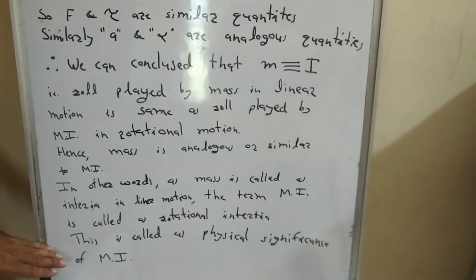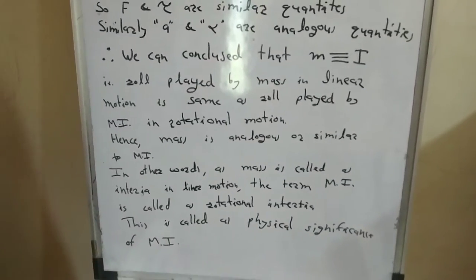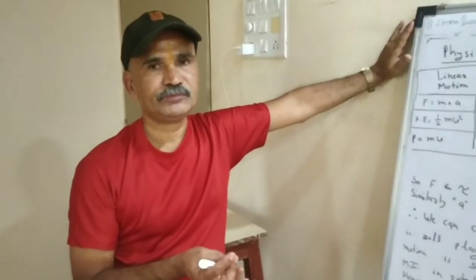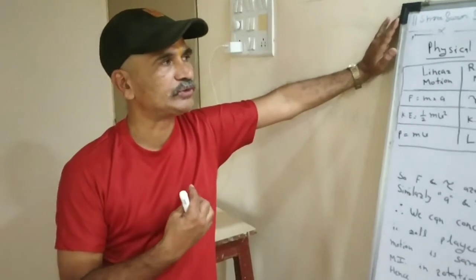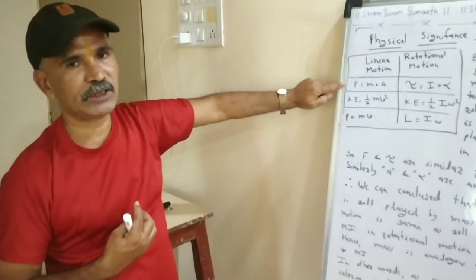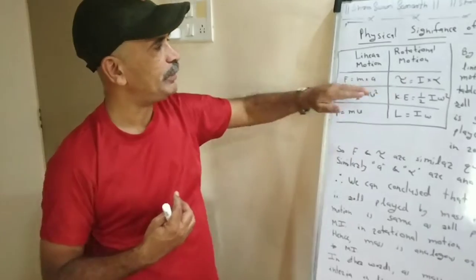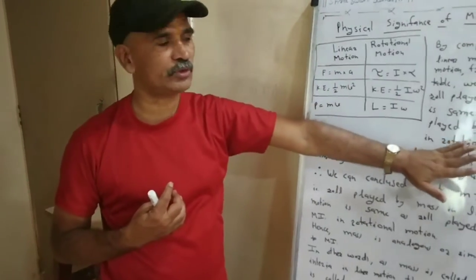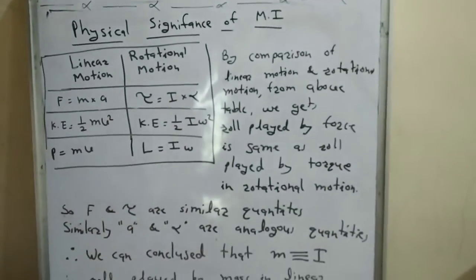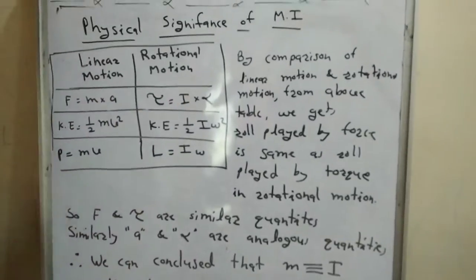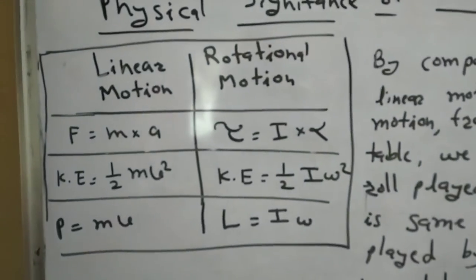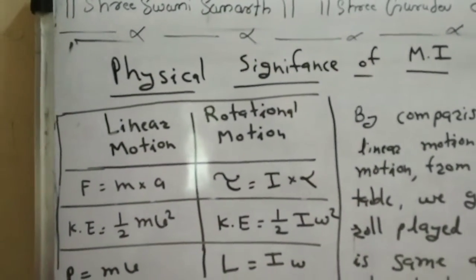This is the physical significance of moment of inertia. In examinations, questions can be asked to define moment of inertia, state its SI unit and dimensions, or give its physical significance. For physical significance, the comparison table between linear and rotational motion is compulsory — showing force and torque, A and alpha, and mass and I as analogous quantities. This table is important to get full marks.